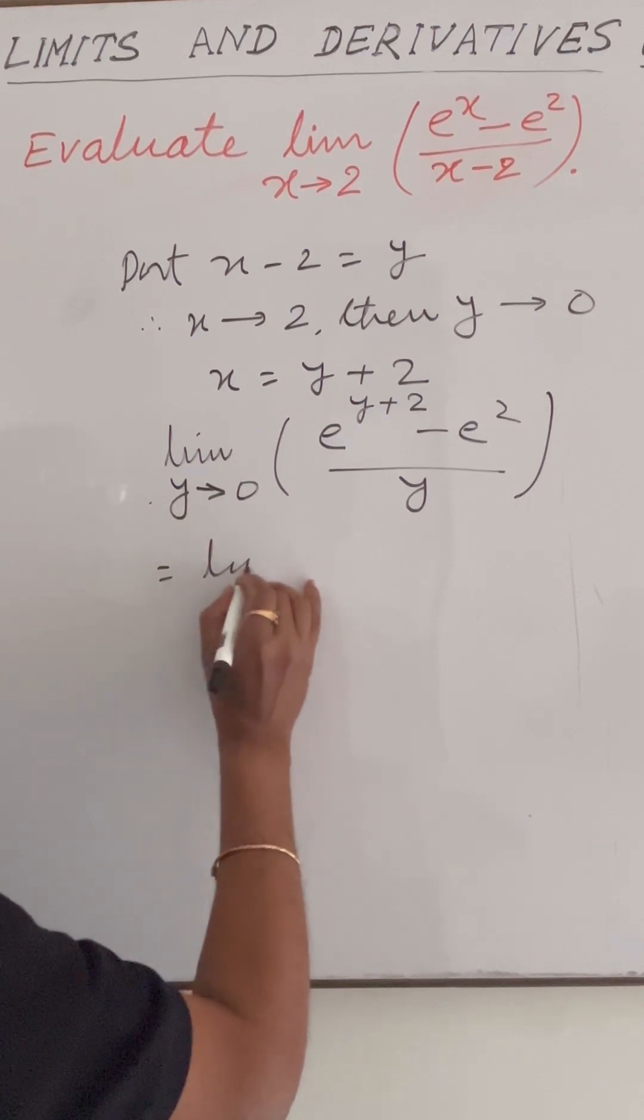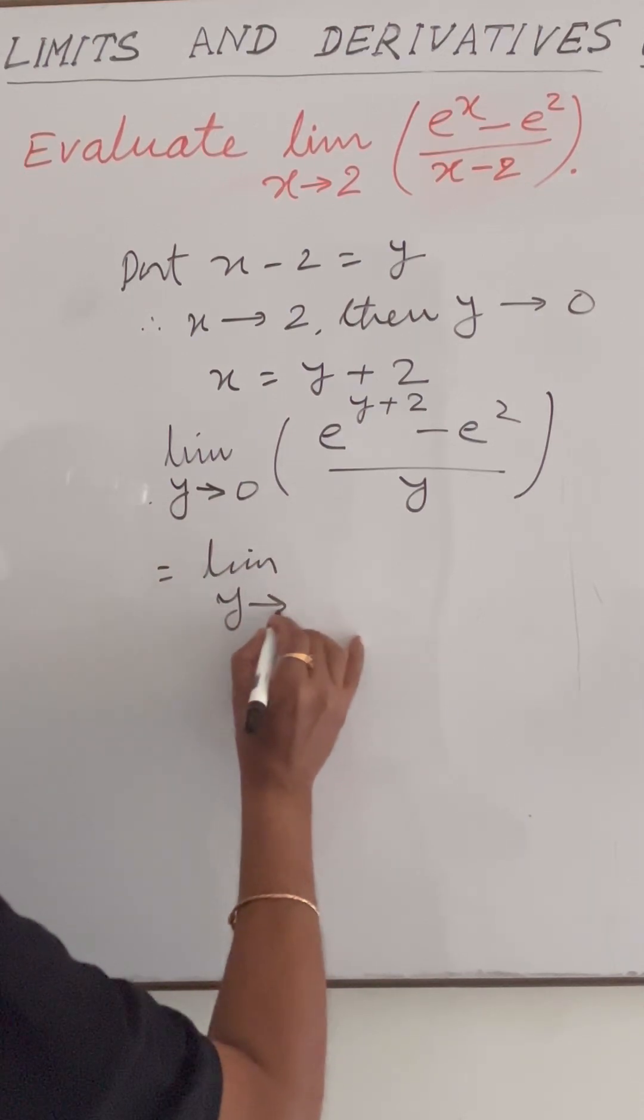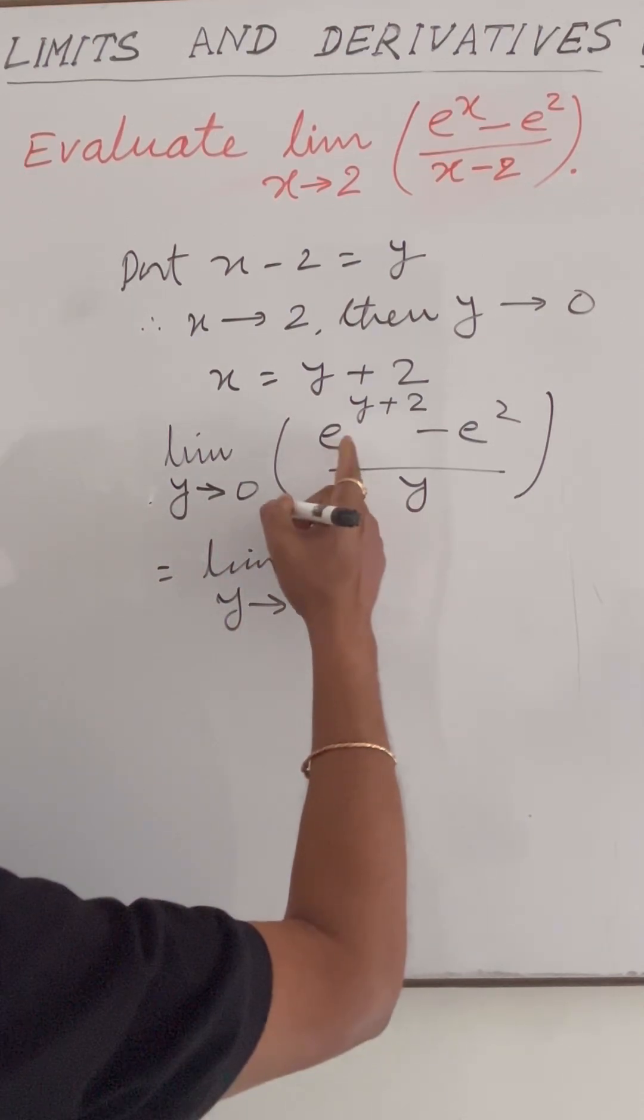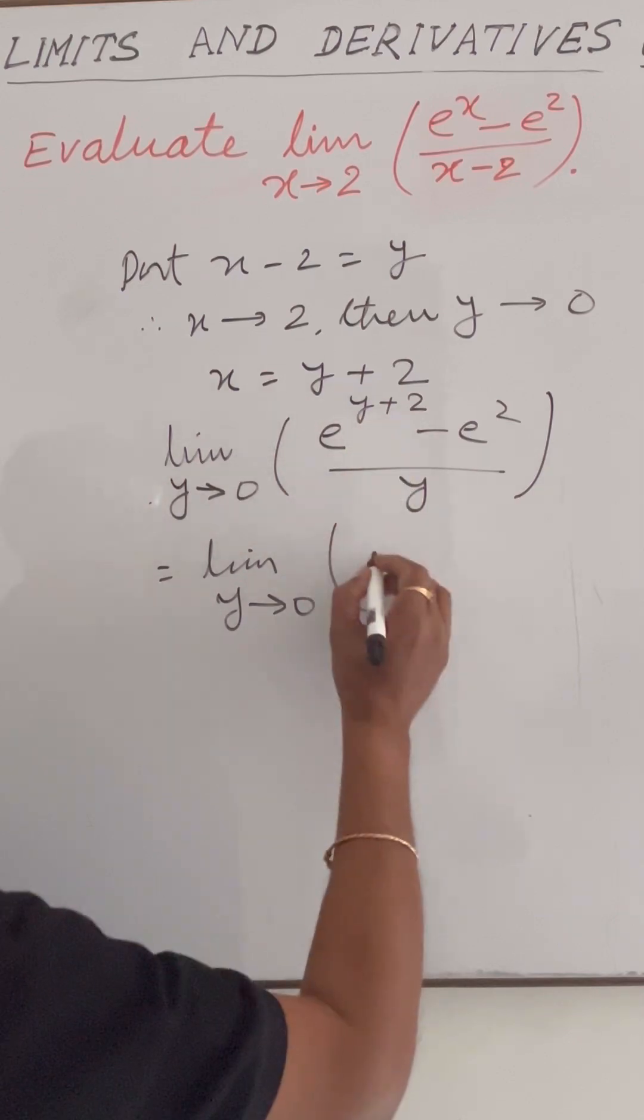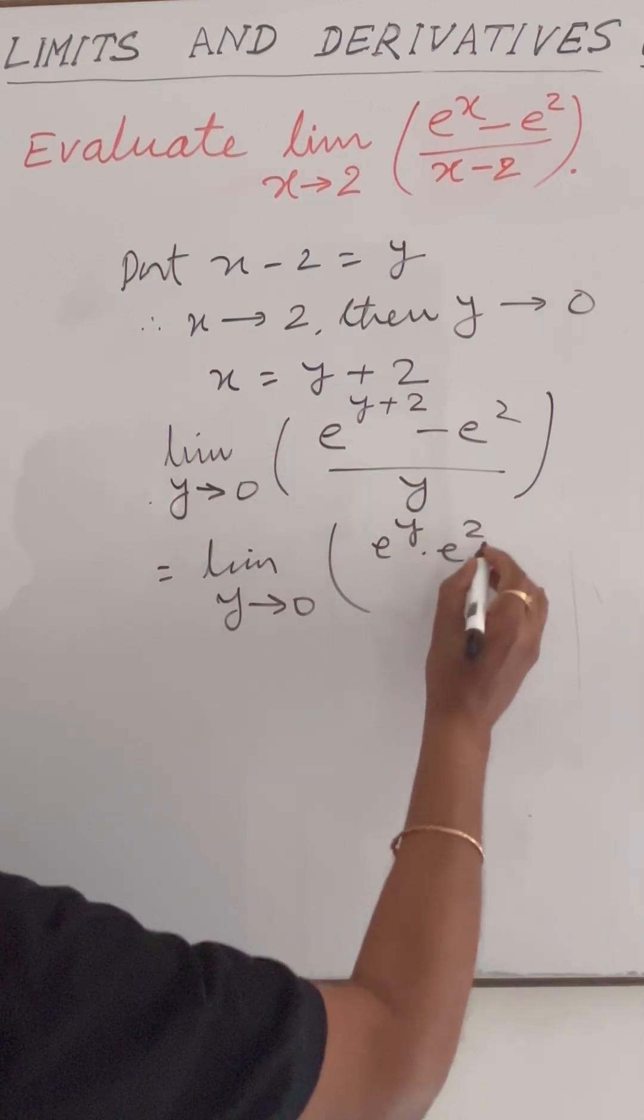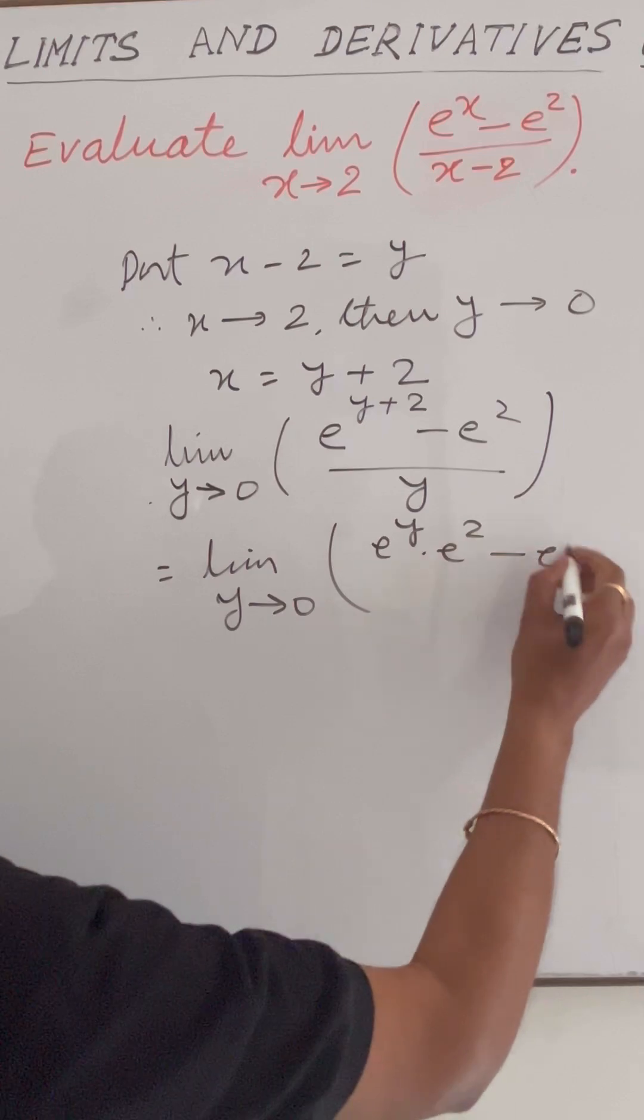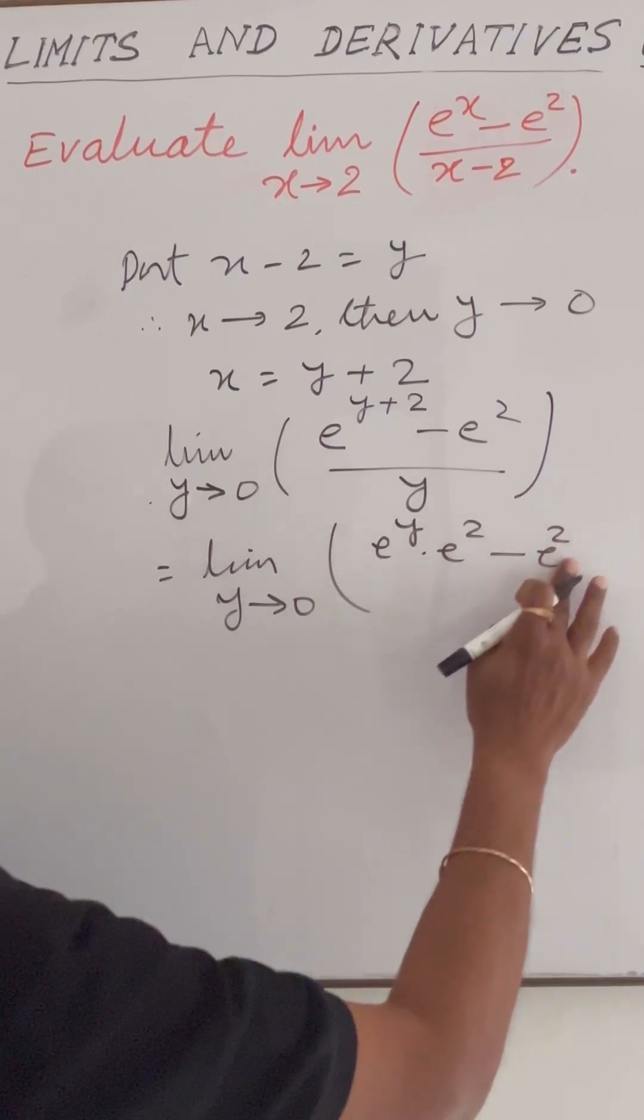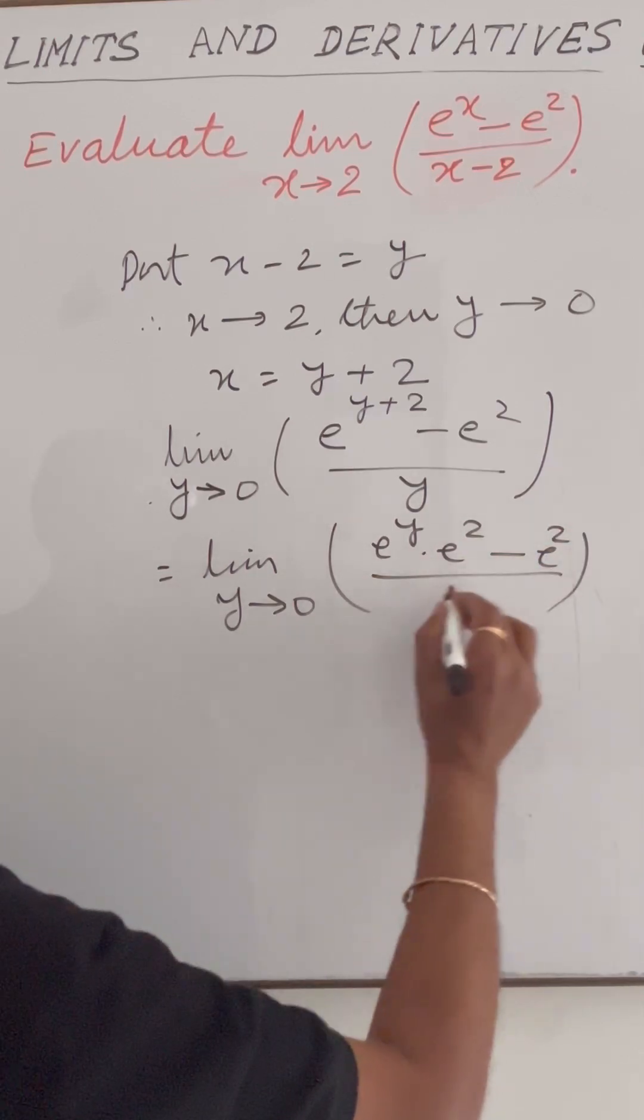This is equal to limit y tends to 0. Here e to the power y plus 2 is e to the power y into e squared. The next term is minus e squared upon y.